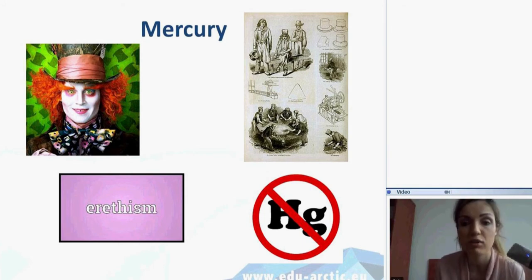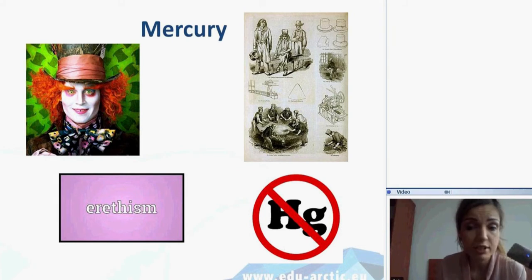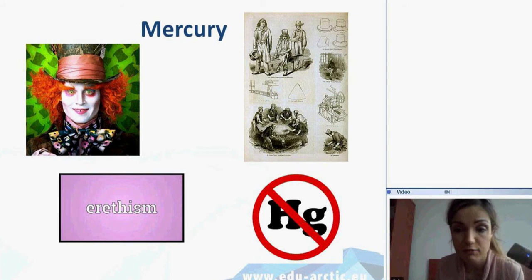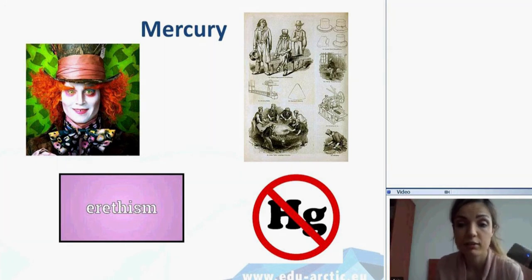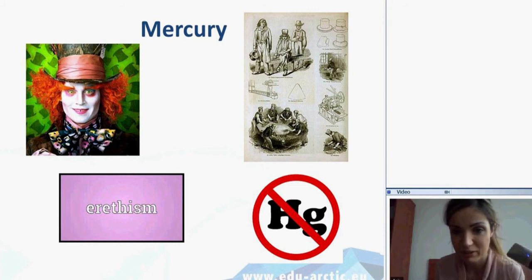This is called Eretism, or Erethism mercurialis — a neurological disorder that affects the whole central nervous system. It was sometimes known as 'mad hatter disease' and was very common among English hat makers. Mercury was also widely used in medicine for centuries, for example as a diuretic, antibacterial, antiseptic, and laxative.